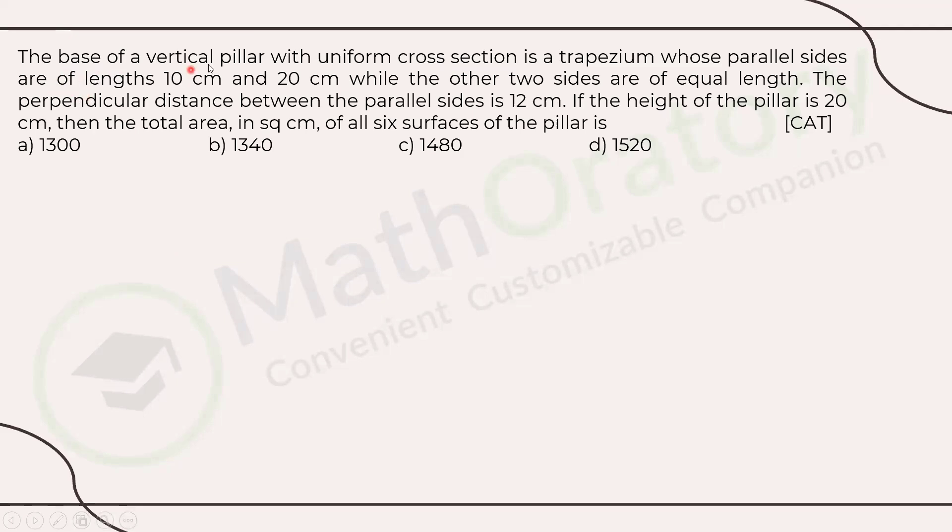We have been given the base of a vertical pillar. So as soon as you read vertical pillar, you should understand it's a 3D object with uniform cross-section. What does uniform cross-section mean? If you cut the pillar at any particular point parallel to the base, you will get the same cross-section. The cross-section is a trapezium. Since it's a uniform cross-section, wherever you cut it parallel to the base, you'll get another trapezium.